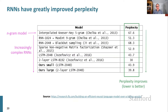Here are some perplexity numbers. Traditional n-gram language models commonly had perplexities over a hundred, but if you made them really big and careful you could get them down to around 67. As people started building more advanced recurrent neural networks — especially moving beyond simple RNNs into LSTMs — people started producing much better perplexities, getting down to 30. This is from results a few years ago; nowadays people get perplexities even lower than 30.